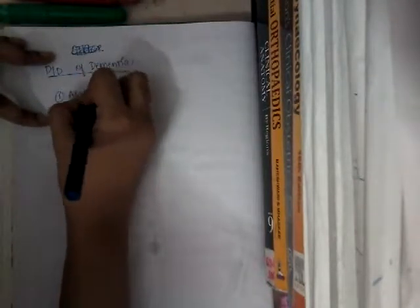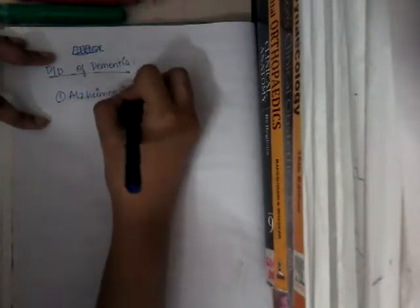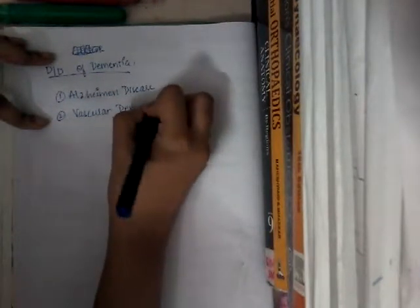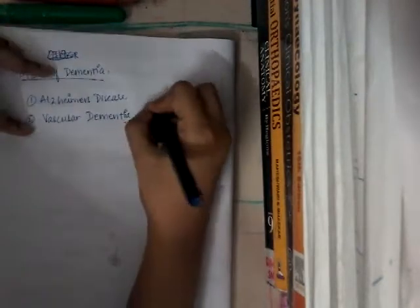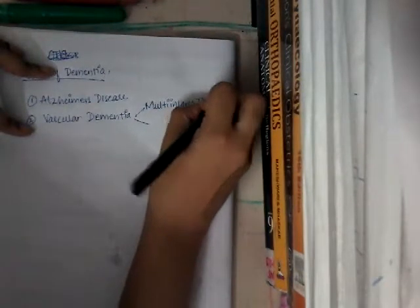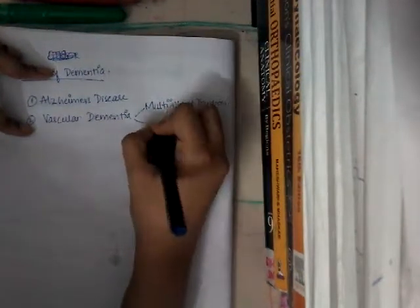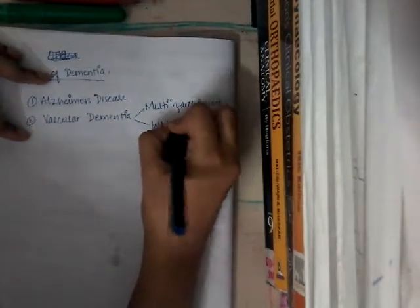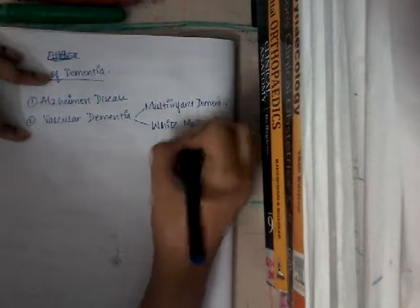In our last classes we learned about the differential diagnosis of dementia. We covered number one, Alzheimer's disease, and then vascular dementia, which is the next most common. In vascular dementia, we learned about two things: multi-infarct dementia and white matter disease, also called leukoaraiosis.